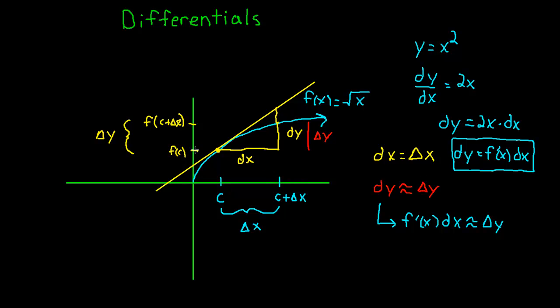The actual change from f of c to f of c plus delta x is my delta y. Let me just draw that real quickly for you. This right here is delta y, which is this guy. Well, we saw that dy is a good approximator of delta y if delta x is small enough.